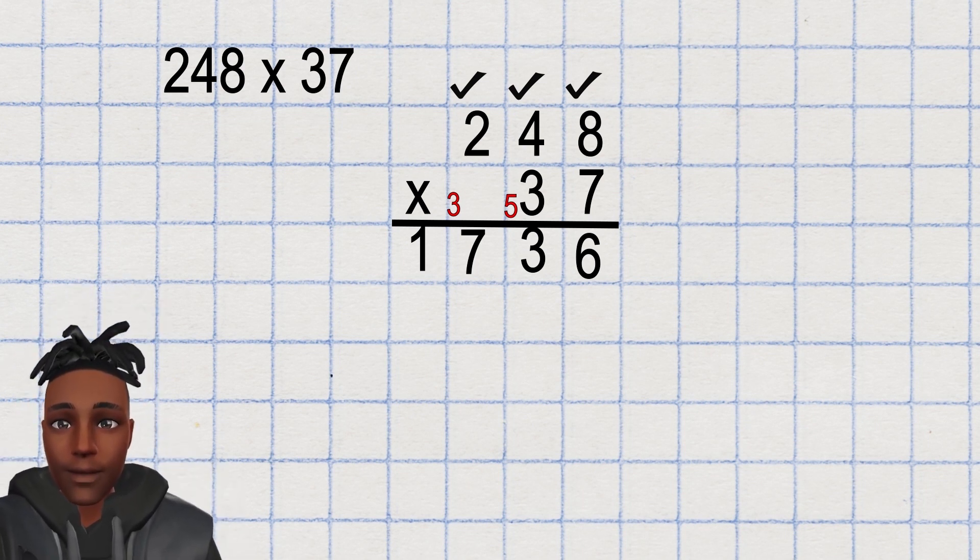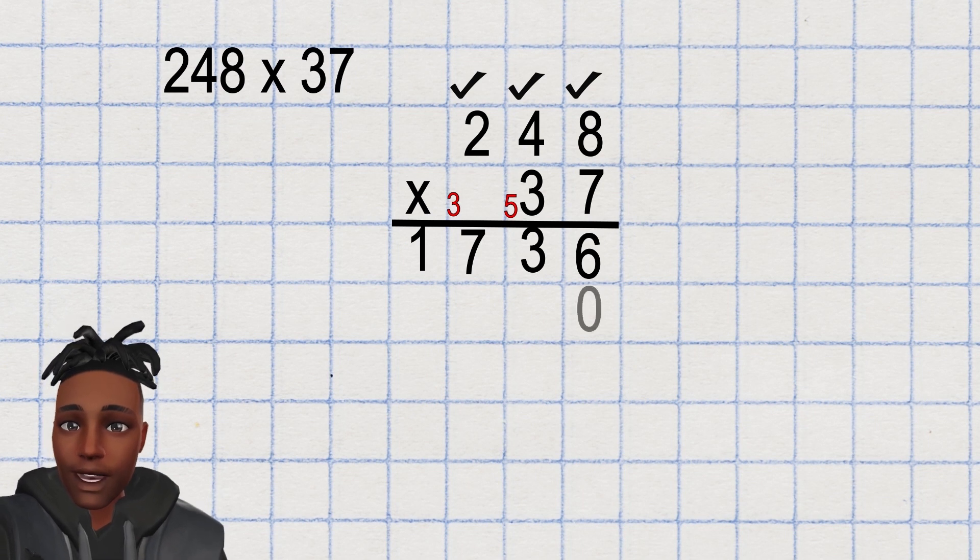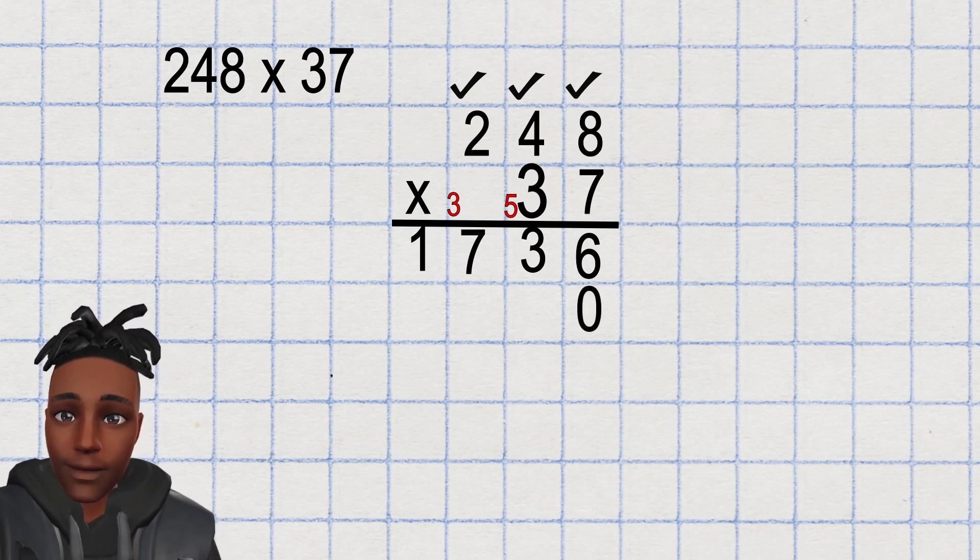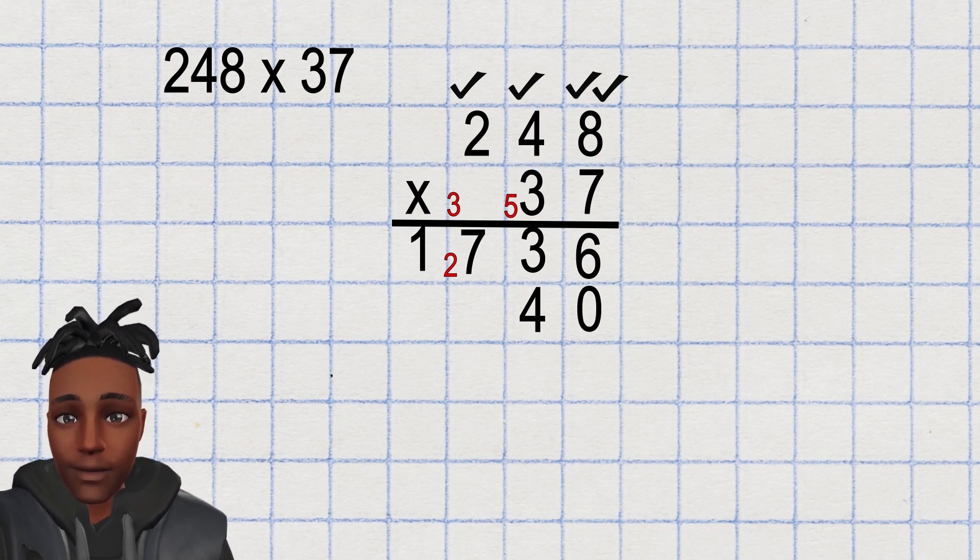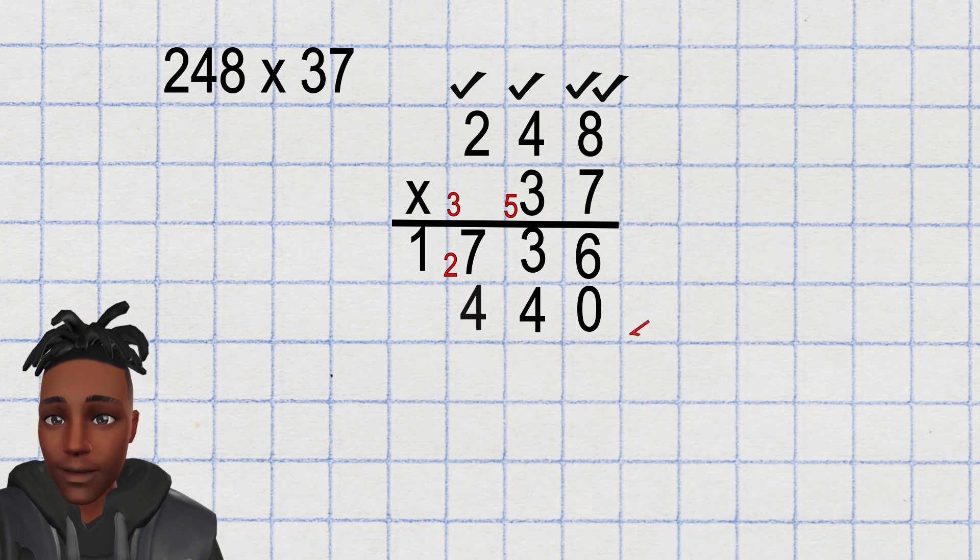Next row and multiplying by the 3. Put my 0 down as I am technically multiplying by 30. Then 8 times 3, 24. Place the 4 in the answer row one column left of the 8. Carry the 2. Tick the 8. Then 4 times 3, 12. Remembering to add the 2, 14. 4 in the answer row and carry the 1. Tick the 4.